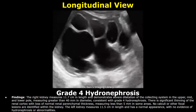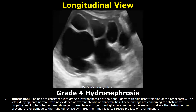In grade 4 hydronephrosis, there is severe dilatation of the collecting system and significant thinning of the renal cortex, with loss of normal renal parenchymal thickness — in this case, less than 5 mm in some areas. Here is the impression. Findings are consistent with grade 4 hydronephrosis with significant thinning of the renal cortex. These findings are concerning for obstructive uropathy leading to potential renal damage or renal failure. You must also write about urgent urological intervention, because urgent treatment is required in this case.